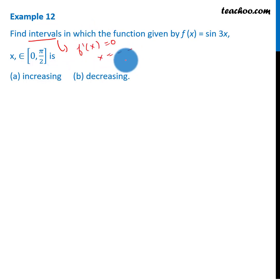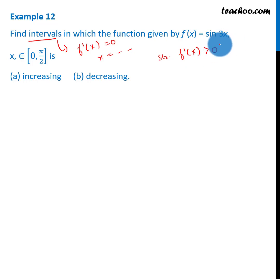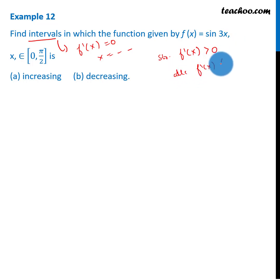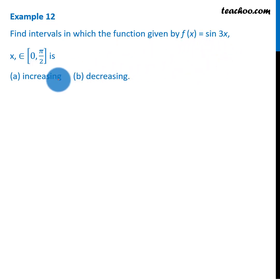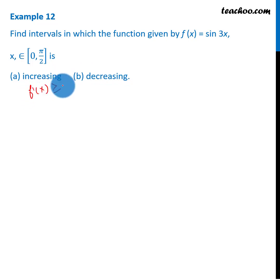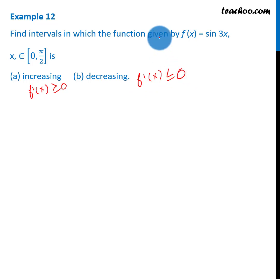Notice here: if we check for strictly increasing, then we check that f'x is greater than 0, and for strictly decreasing, f'x is less than 0. But because we need to check increasing and decreasing (not strictly), we check that f'x is greater than or equal to 0 for increasing, and f'x is less than or equal to 0 for decreasing.